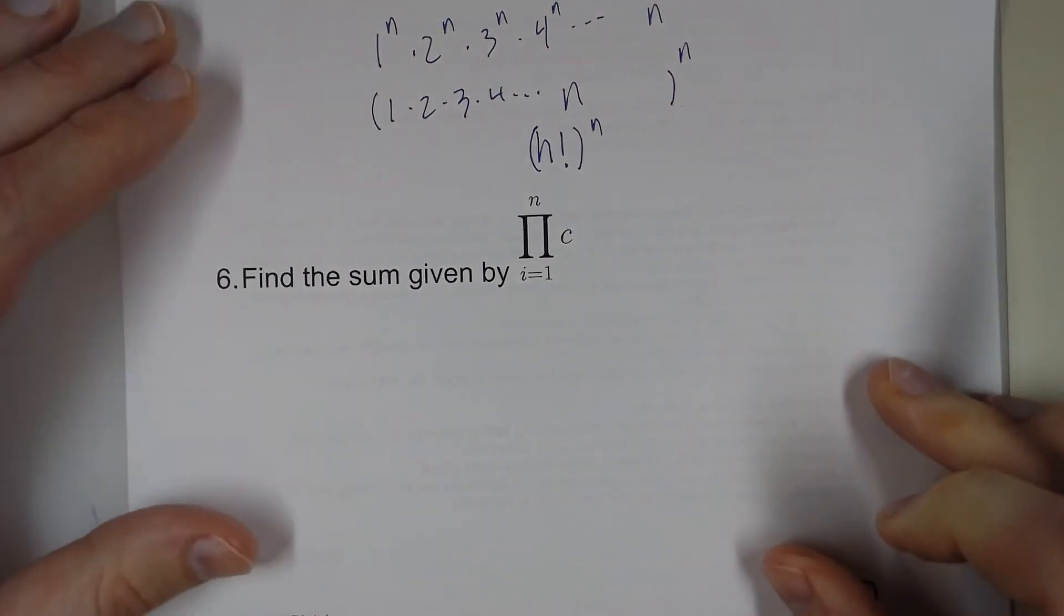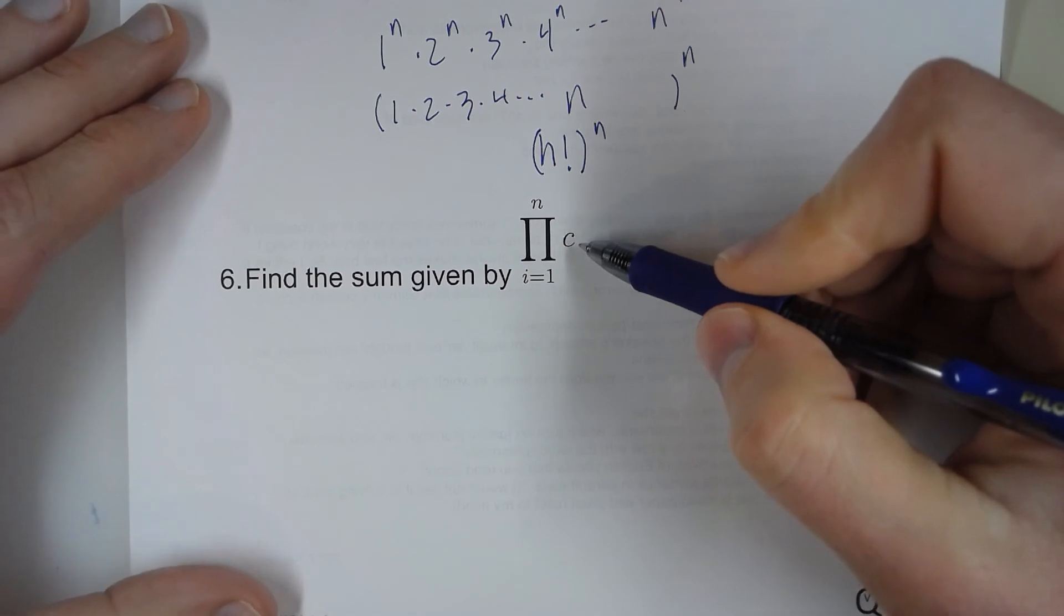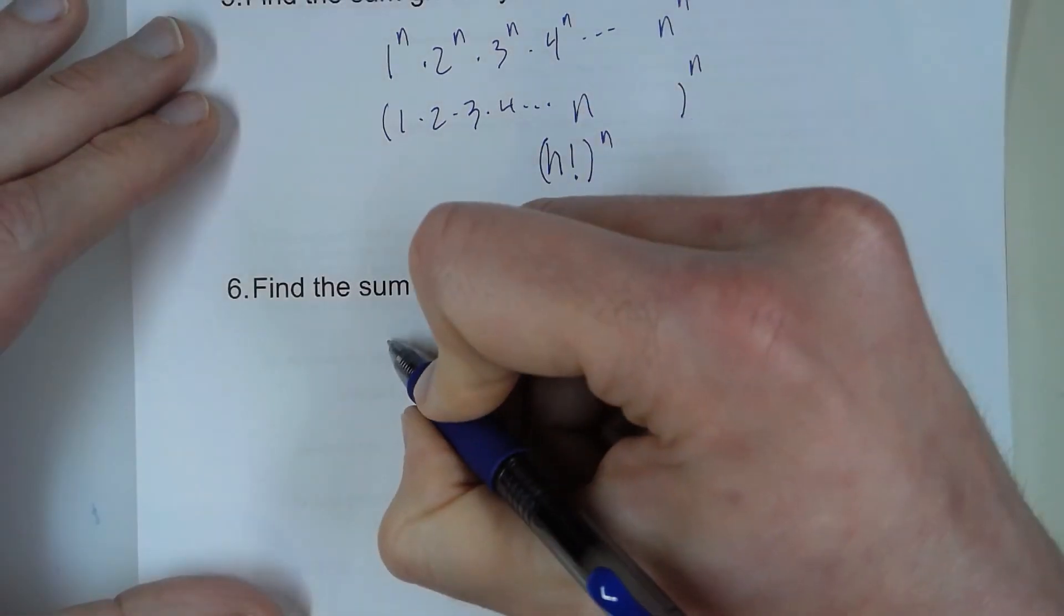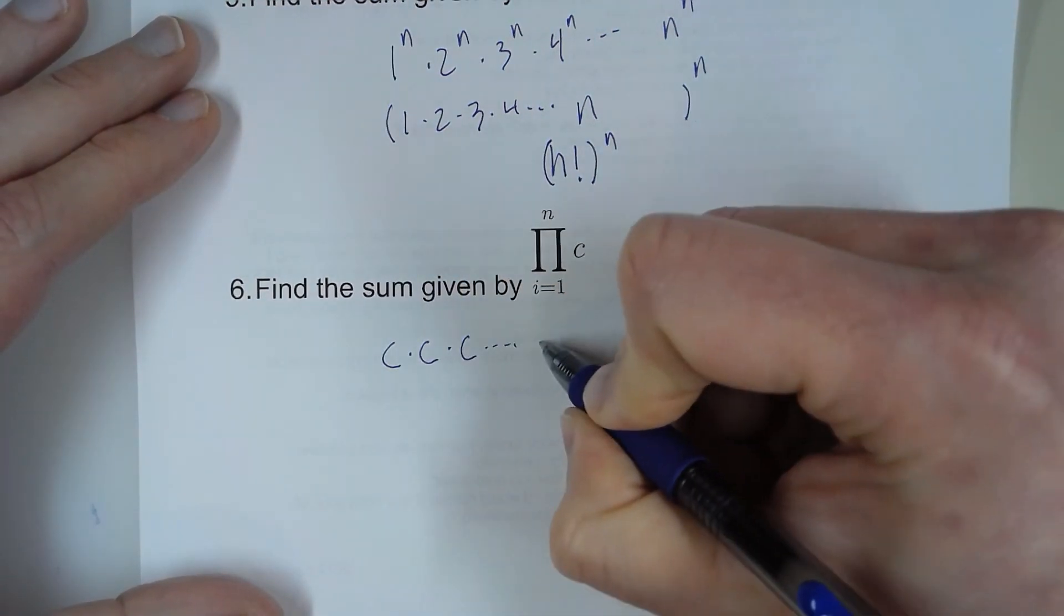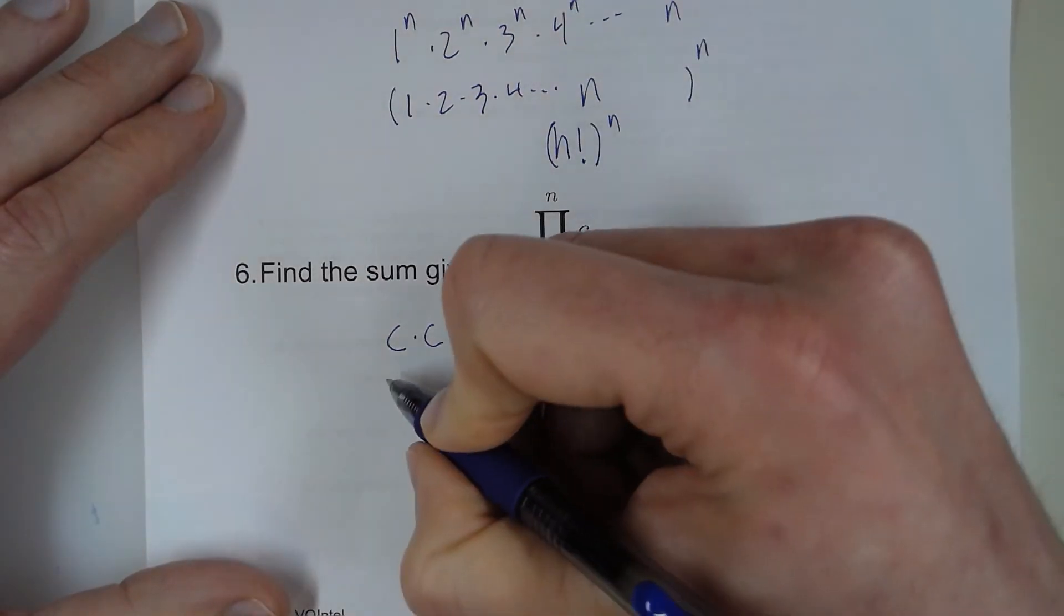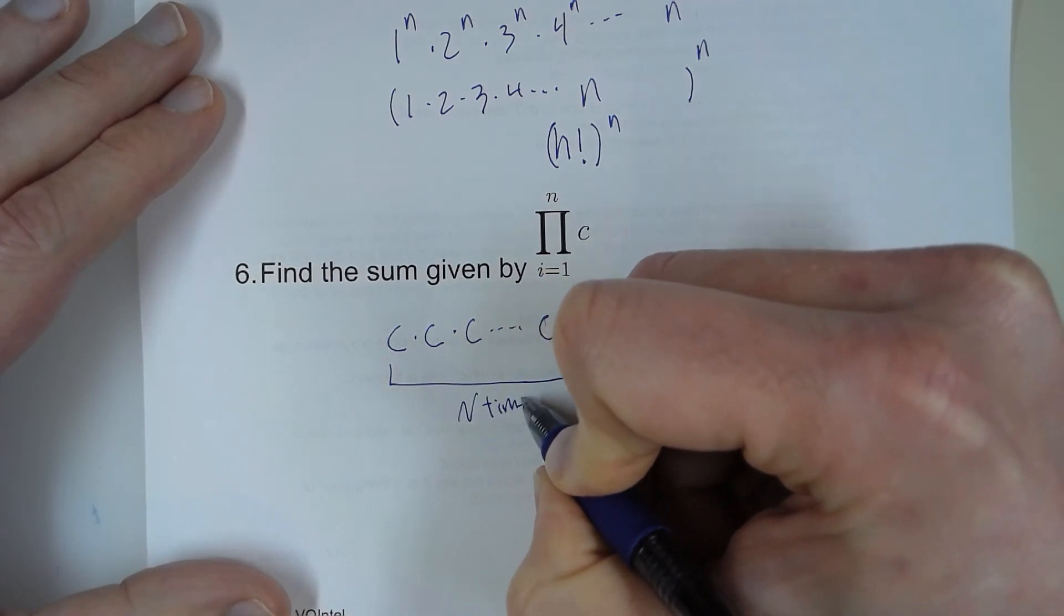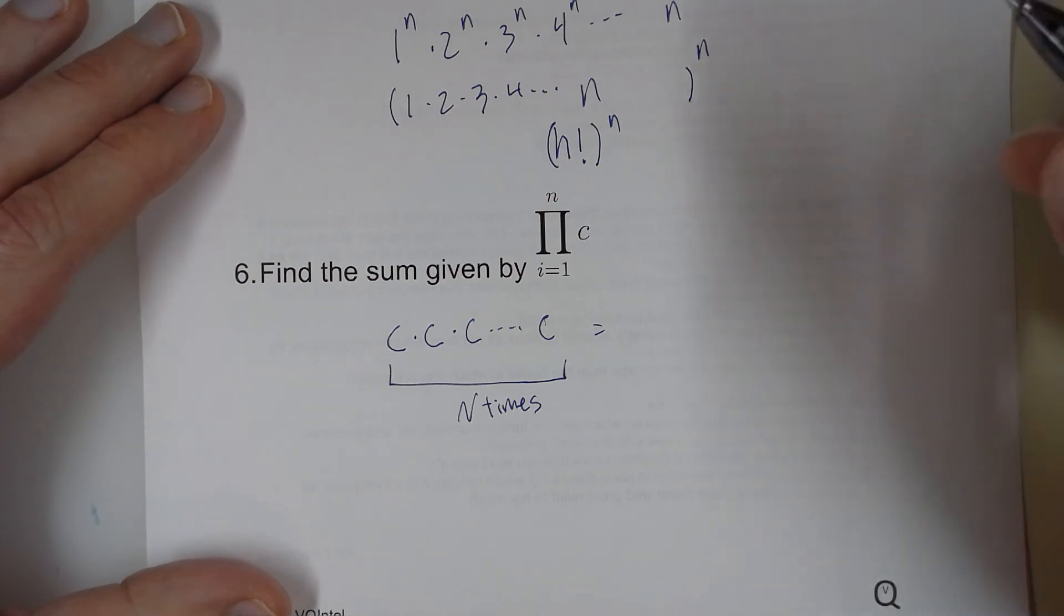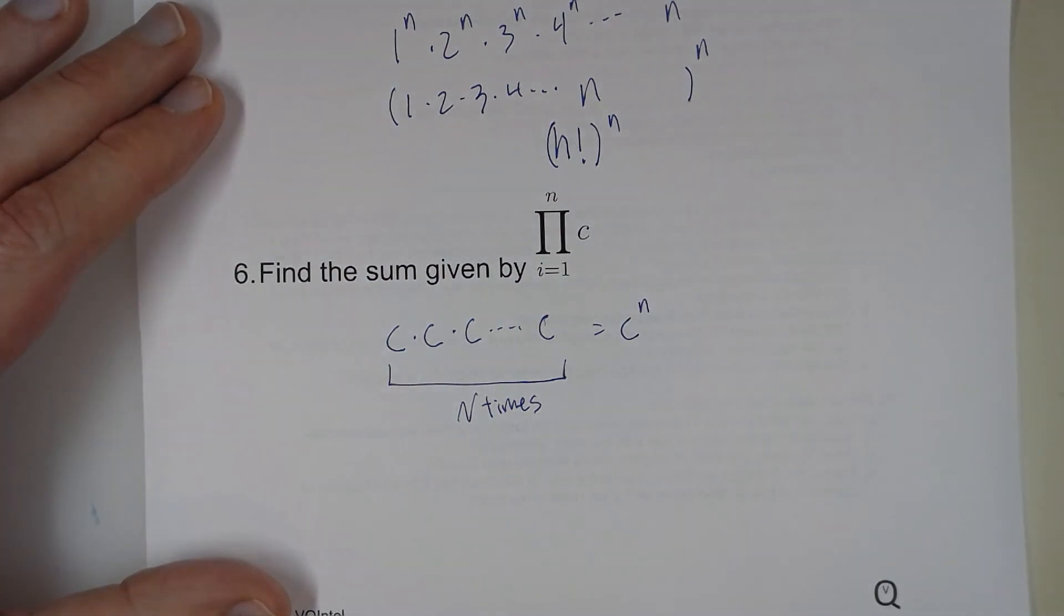And then the last one, here we're plugging in 1 through n into this expression. Now c is not i. So if I plug 1 in for i, it's just c. If I plug 2 in for i, it's c. I plug 3 in for i, it's c, dot dot dot. And if I plug n in for i, it's also c. So I'm multiplying c n number of times. So I can shorten that to write it as c to the nth power.